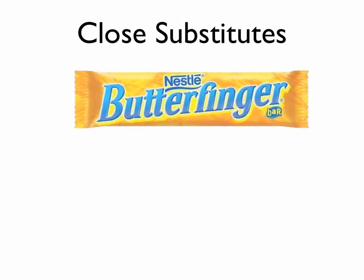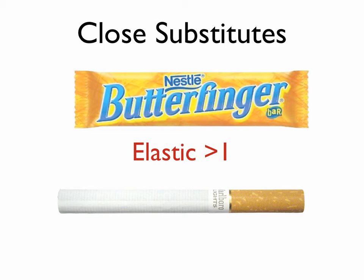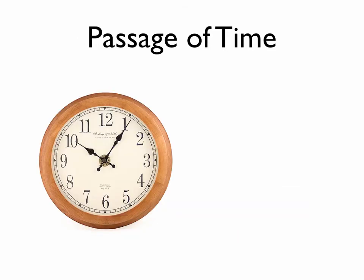The first item is close substitutes. A Butterfinger has lots of close substitutes, therefore the elasticity is probably going to be significantly larger than one. Cigarettes, on the other hand, are very inelastic — there are not a lot of close substitutes for a cigarette.